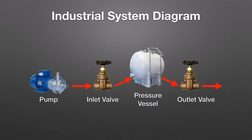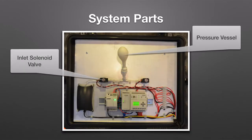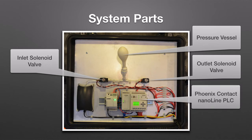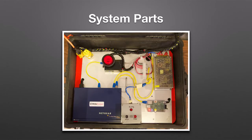Looking at the demo system's construction, it is broken into a top and bottom half. On the top half is mounted a pair of valves, the pump, the vessel — in this case a balloon — a Phoenix Contact PLC, and the wiring necessary to connect everything.